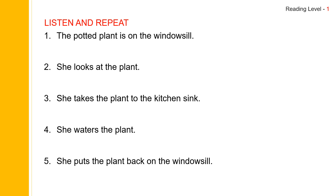Let's go back to the first sentence and practice some pronunciation here. You read the first one as 'potted' — pa, potted. The potted plant is on the windowsill. And next one, she looks — read together as 'look', 'looks'. She looks at the plant.